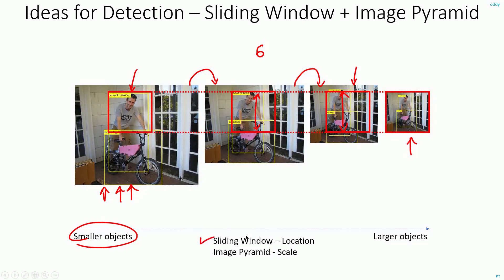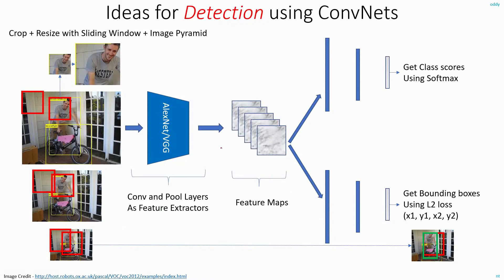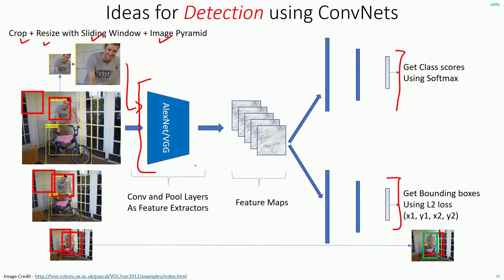So using sliding window, I solve the problem of location — irrespective of where the object is present, I can detect it. Using image pyramid, I solve the problem of scale — irrespective of what size the object is, I can still detect it. These are the two extra pre-processing steps on the input side. Using the same localization network from before, the pipeline is: take the image pyramid, apply the sliding window, crop and resize at each step, then feed these cropped and resized images into the localization framework to perform object detection.